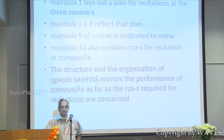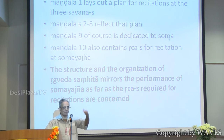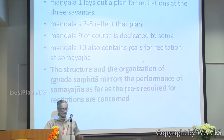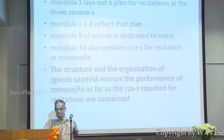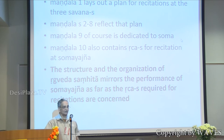The conclusion: Mandala one lays out the plan for recitations at the three savanas. Mandalas two to eight reflect this plan, with some details supplied from there. Mandala nine is, of course, the Soma yajna. Mandala ten also contains richas for recitation of Soma yajna. So the structure and organization of the Rigveda mirrors the performance of the Soma yajna as far as the recitations of the richas are concerned.